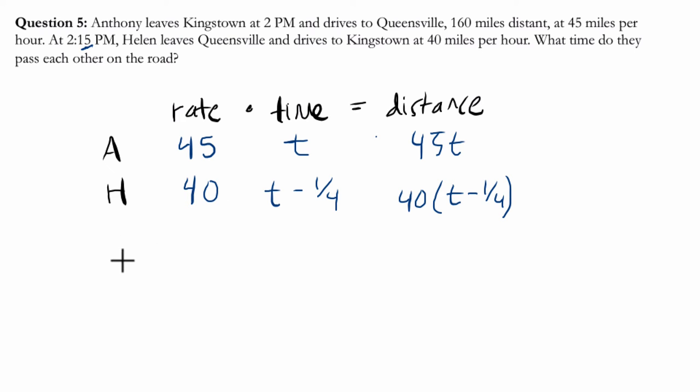And the key to realize is that if we take the total distance that Anthony travels and add to the distance that Helen travels, then we get 160. Why do we know that?